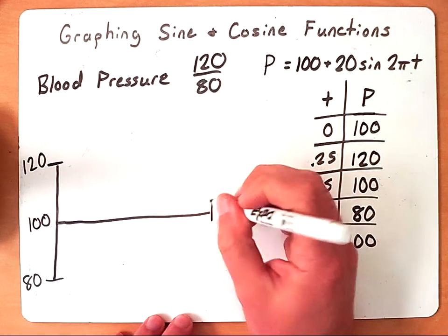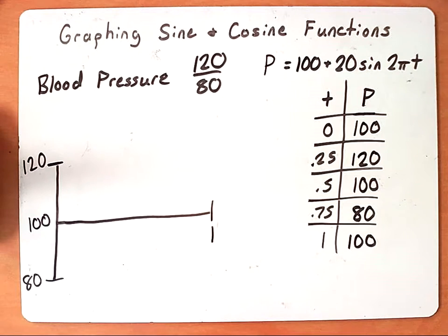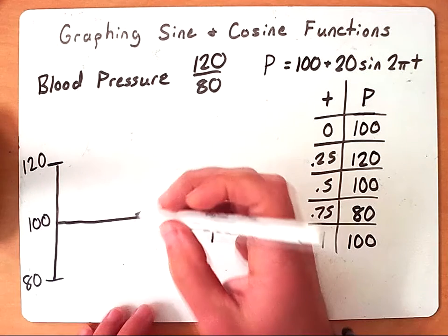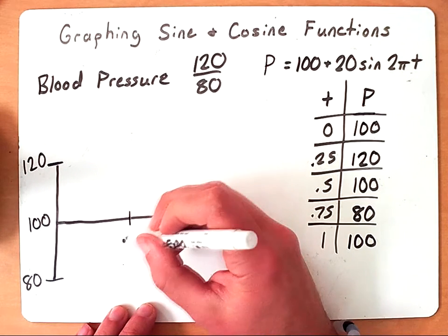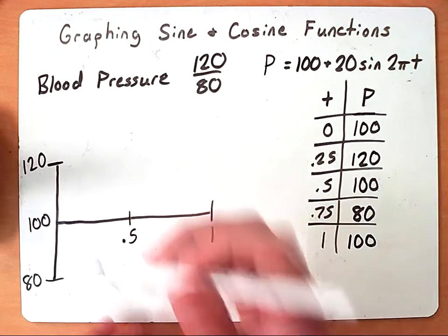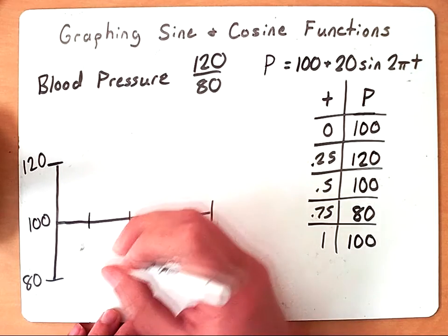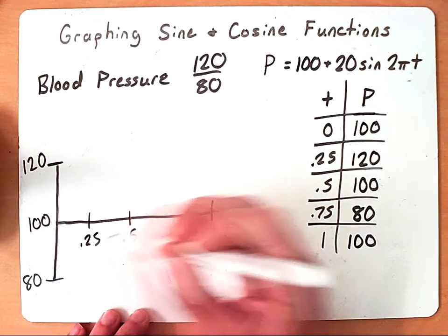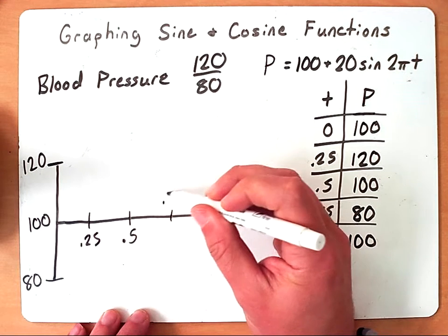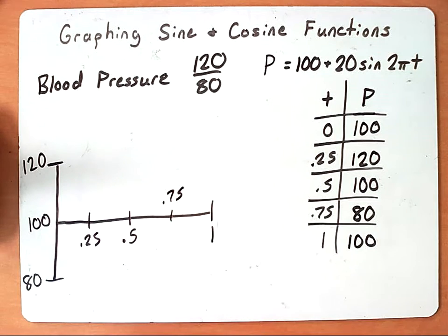All right, so our period is 1 second. So I'm going to come in here and I'm going to put 1 at the very end. I'm going to put a halfway point, which will be 0.5. And then I could come in here and label 0.25 and then label 0.75 as my two quarter marks.